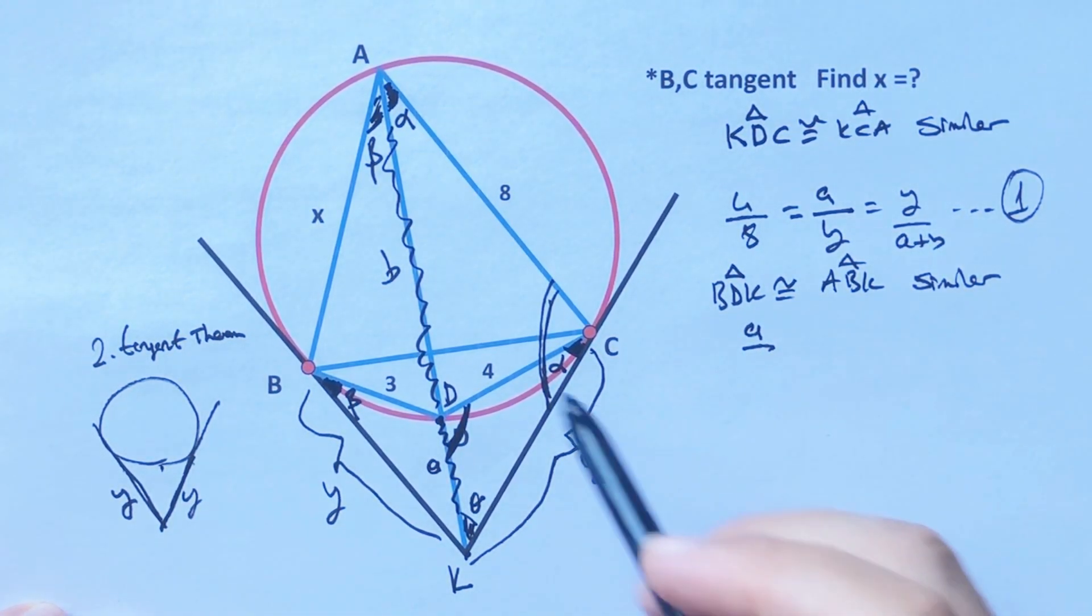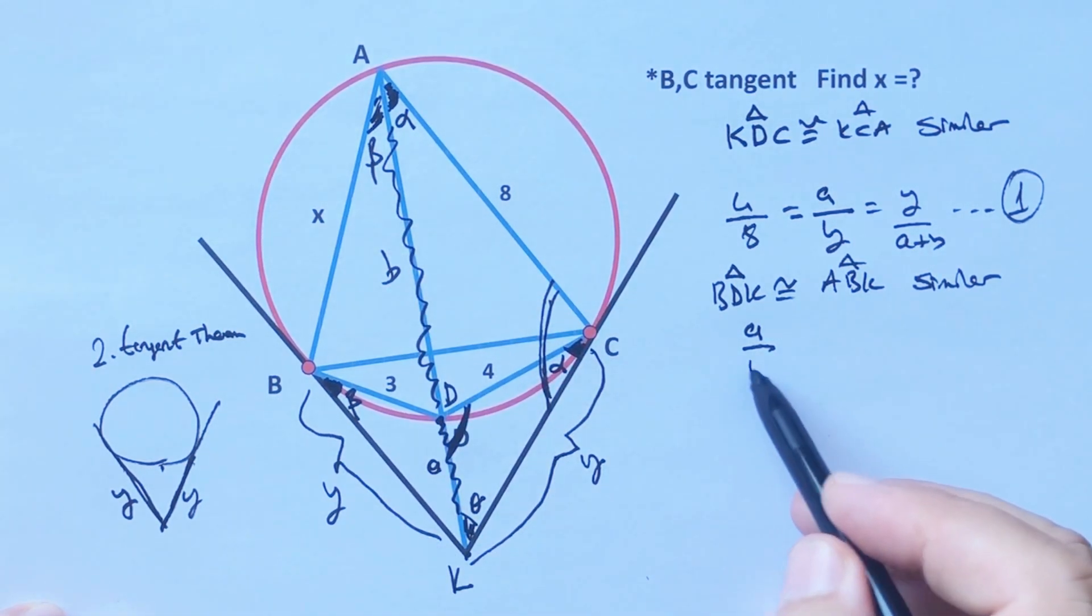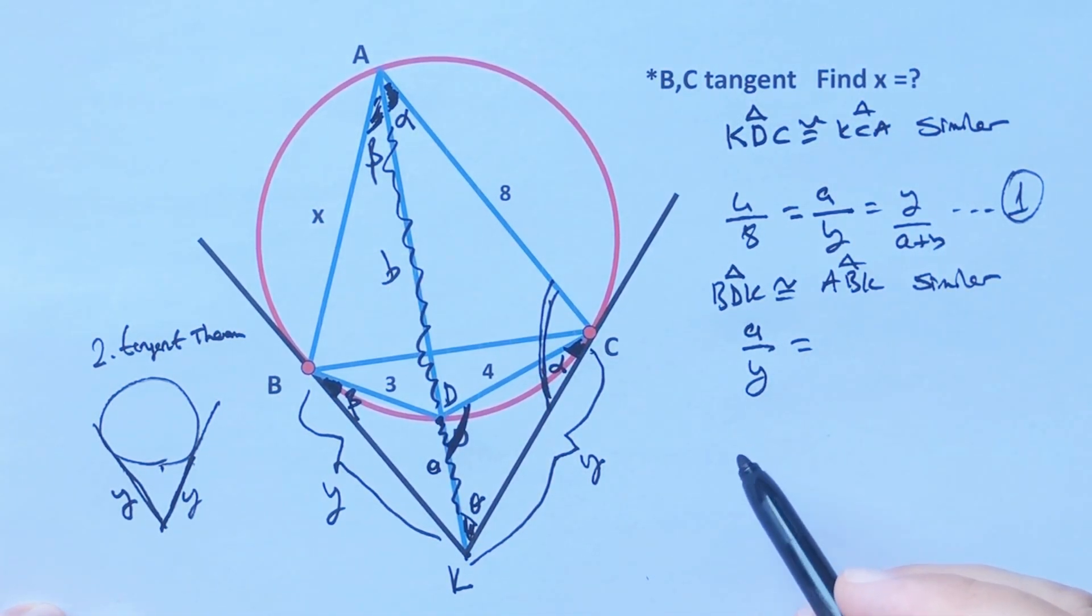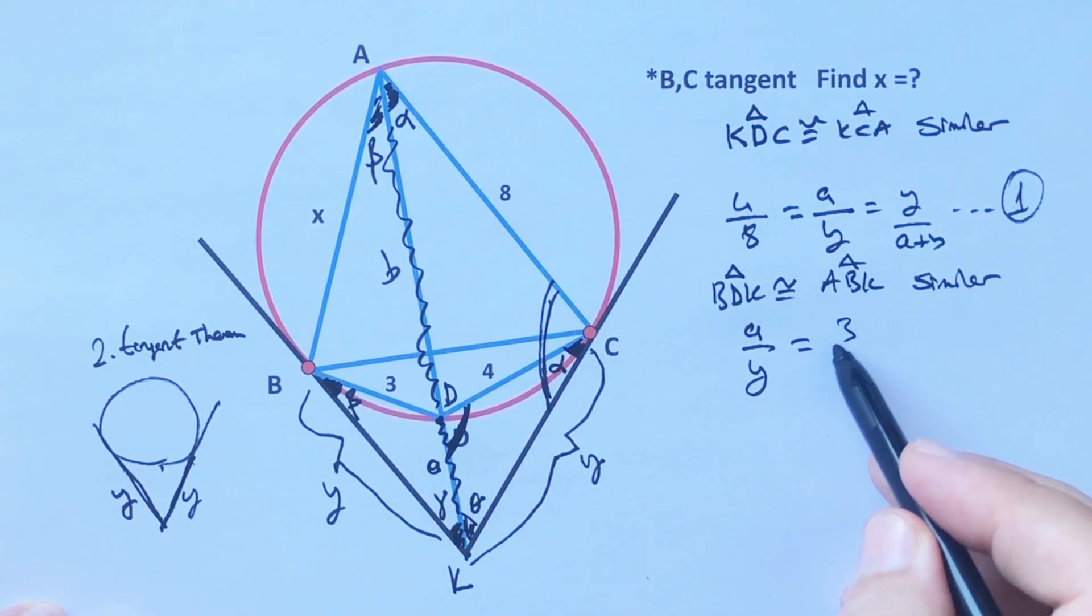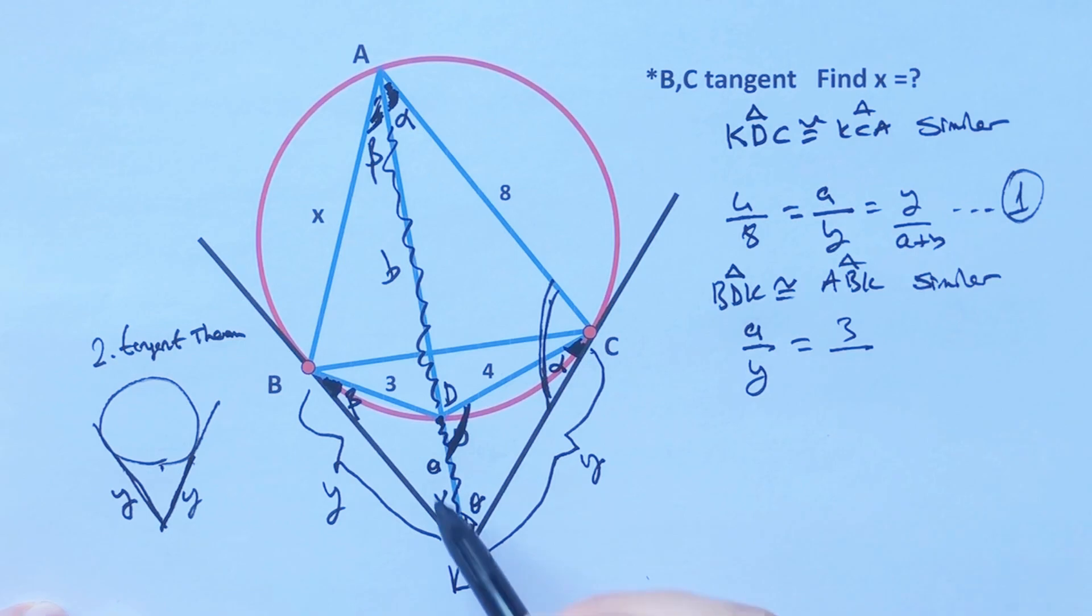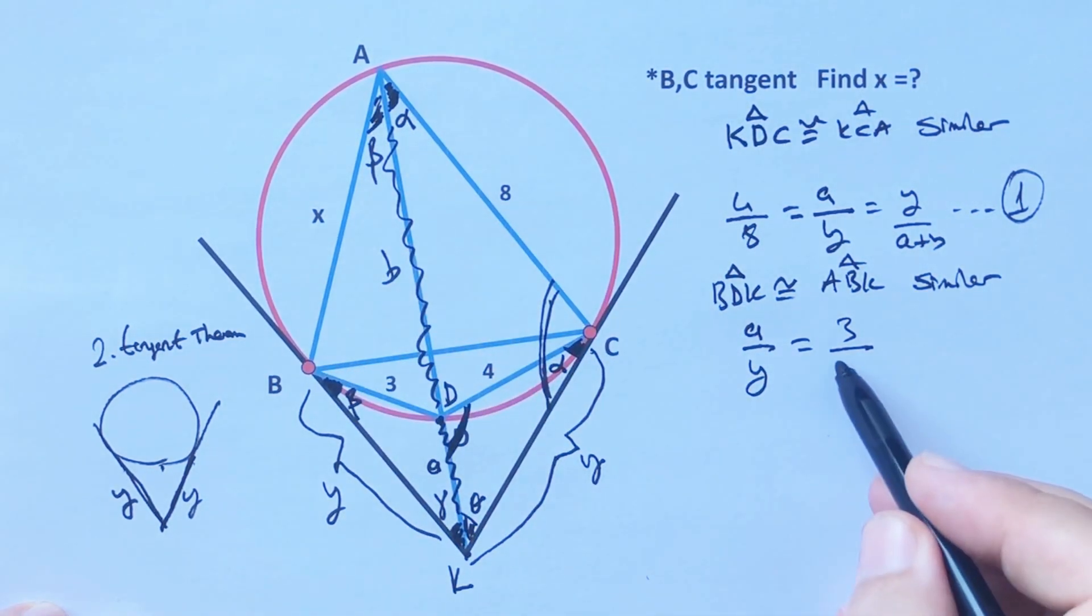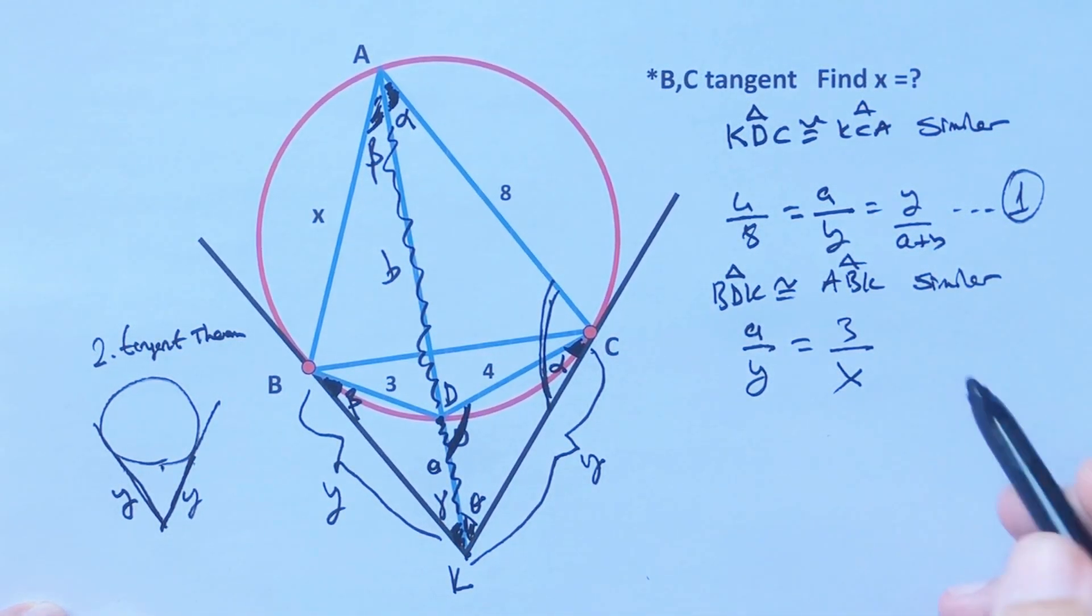a which is opposite of the beta over y which is opposite of the beta equals 3 which is opposite of the gamma over x which is opposite of the gamma. Okay, this is the second equation.